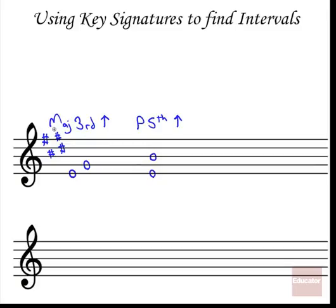For a major seventh above E: counting up seven gives us D, and checking the E major key signature we see it's D sharp. So D sharp is a major seventh above E.